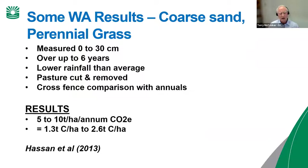I'll throw in a couple of bits of data from WA on sequestration rates. This first one is from subtropical perennial grasses, a bit north of Moora. This data was collected only to 0 to 30 centimeters and only over six years, but the sequestration rates in tons of carbon per hectare per annum are 1.3 to 2.6 — that greatly exceeds what I would have expected on those soil types.